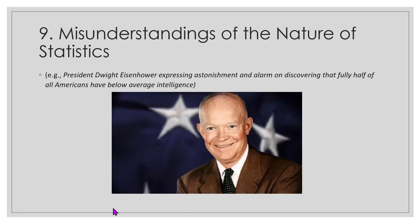You'll also have to be careful about misunderstanding the nature of statistics. President Eisenhower expressed astonishment on discovering that fully half of all Americans have below-average intelligence. But if average is 50%, that means 50% are above it and 50% are below it — that's not really a striking or astonishing discovery.